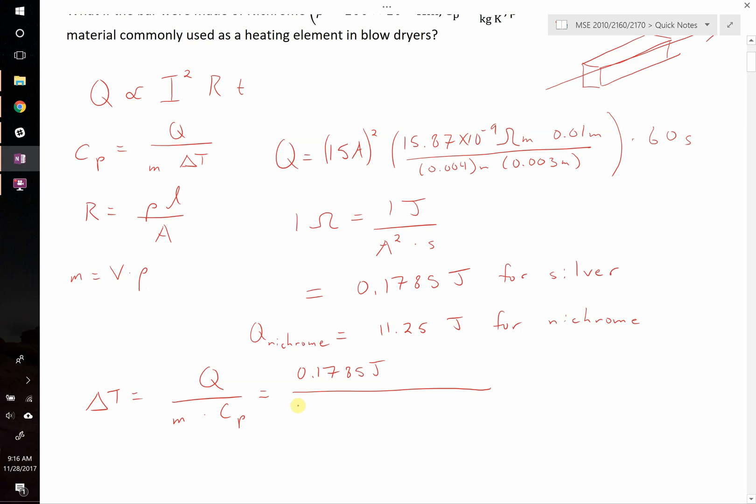So, what's our volume? Our volume is going to be 1.2 times 10 to the negative 7 meters cubed. The density of silver is 10.5 grams per centimeter cubed, or 10,500 kilograms per meter cubed. That's going to allow the meter cubed to cancel out. And then we multiply this by a specific heat.